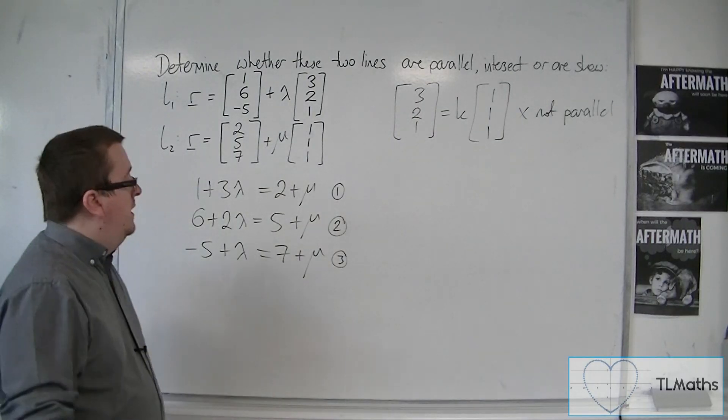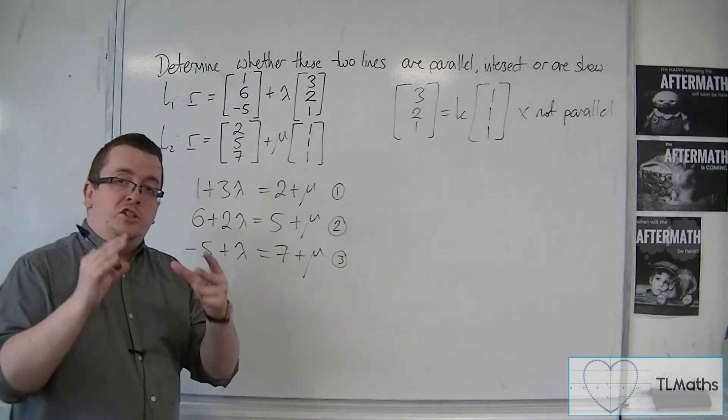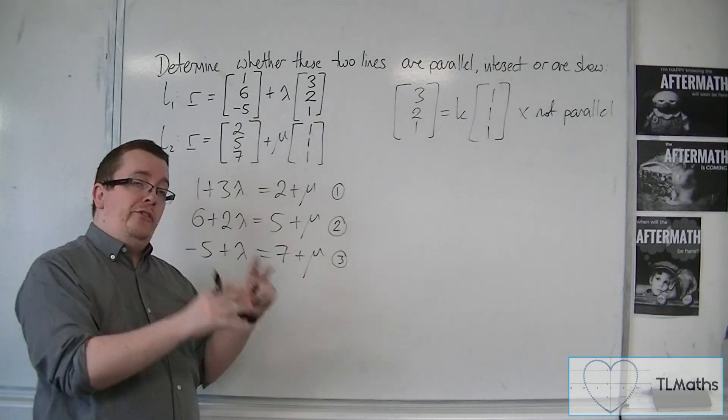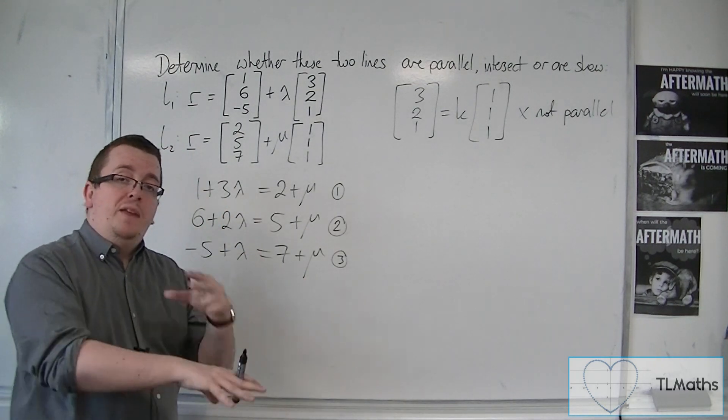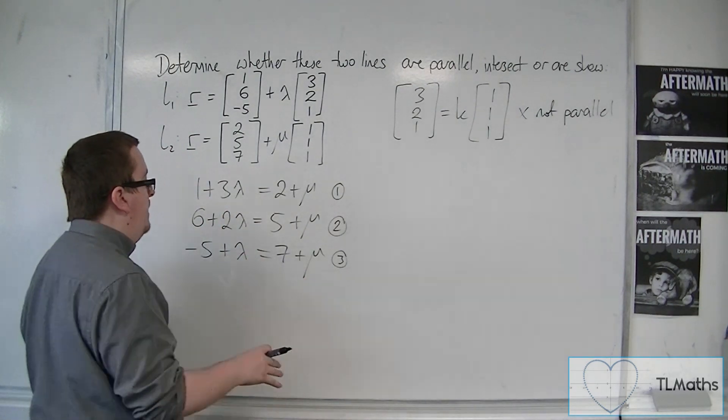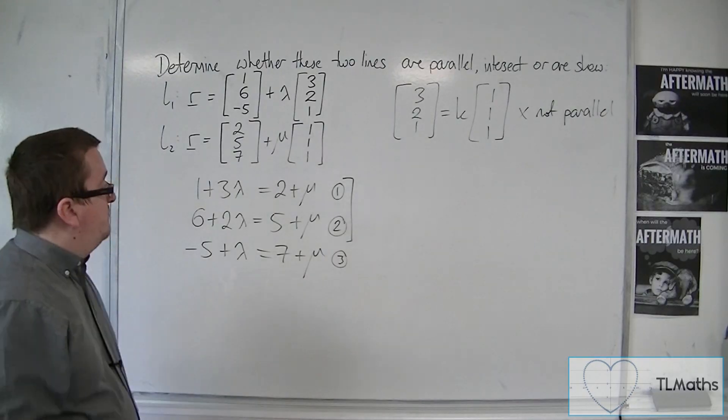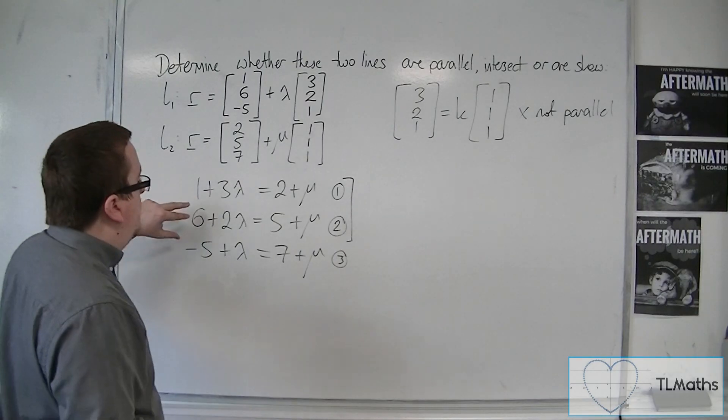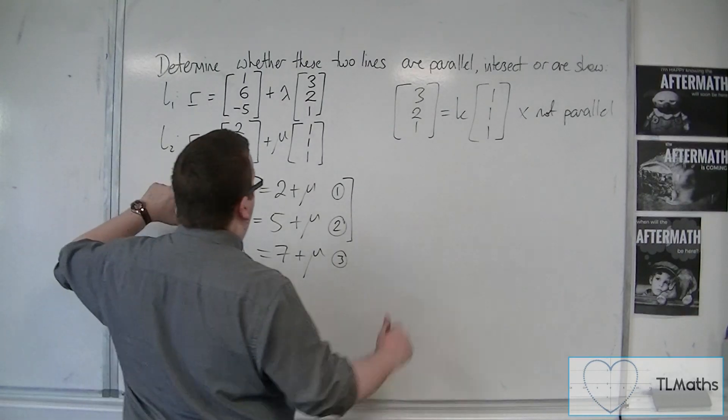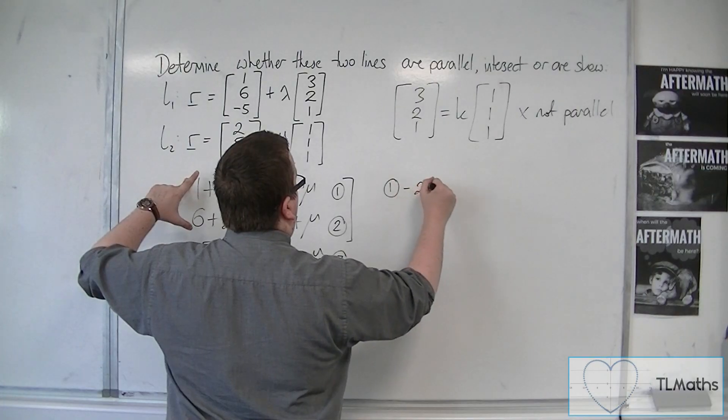1, 2, and 3. And what we do is we pick two of them to solve, to find lambda and mu, and ignore the third. So I'm going to ignore number 3, and I'm going to solve for 1 and 2. So what we have here, what we could do, is do number 1, take away number 2.